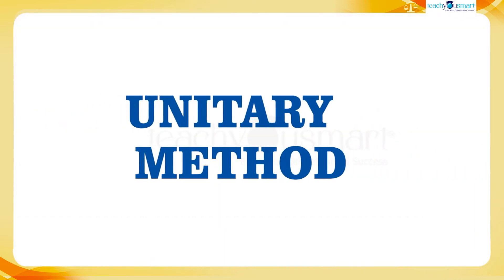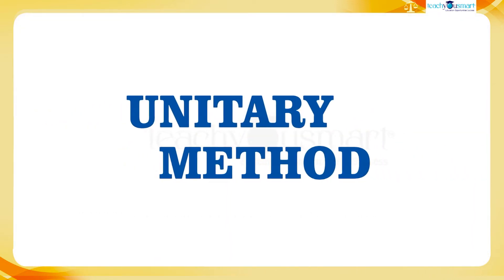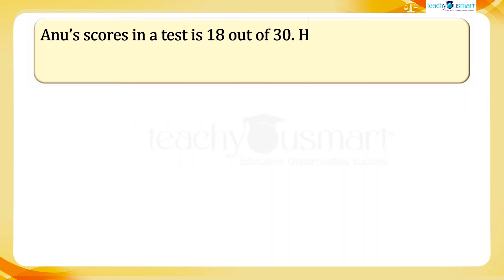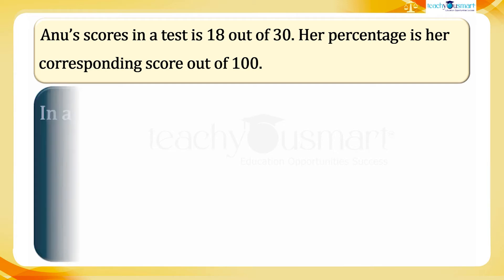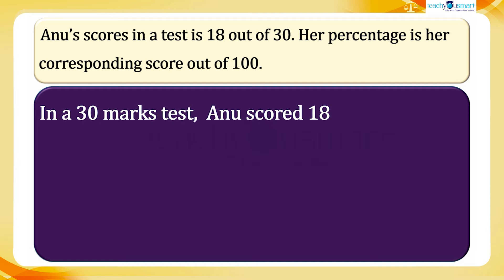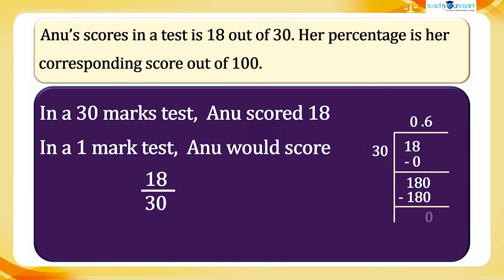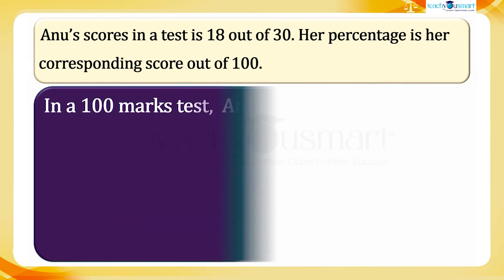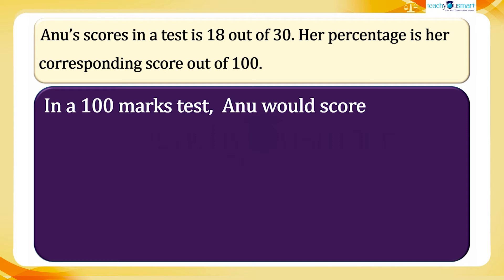For example, Anu's score in a test is 18 out of 30. Her percentage is her corresponding score out of 100. Now applying the unitary method, in a 30 marks test Anu scored 18. Therefore in a one mark test, Anu would score 18 divided by 30 equals 0.6. So in a 100 marks test, Anu would score 18 divided by 30 multiplied by 100, and that would be the percentage.